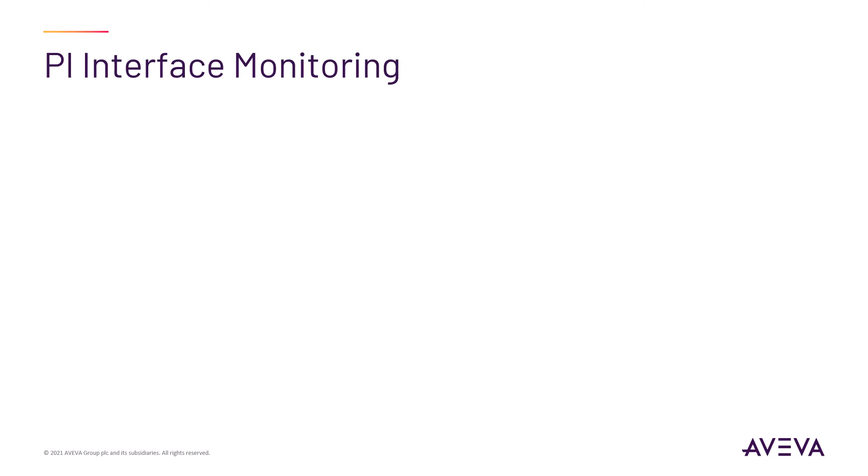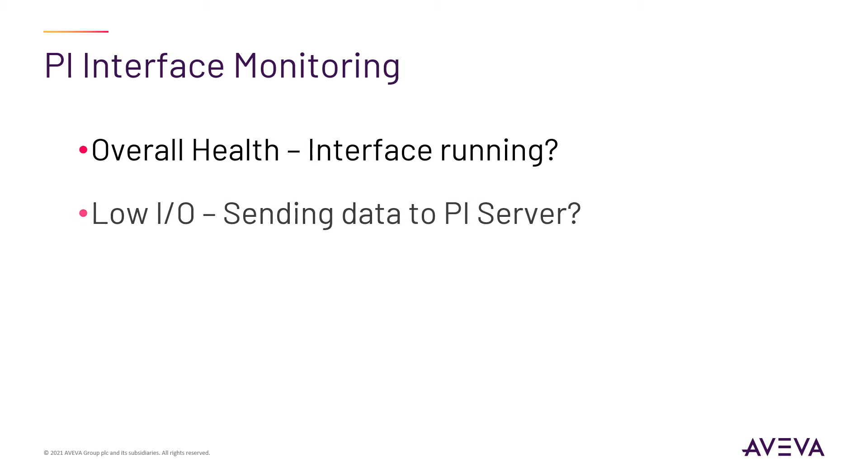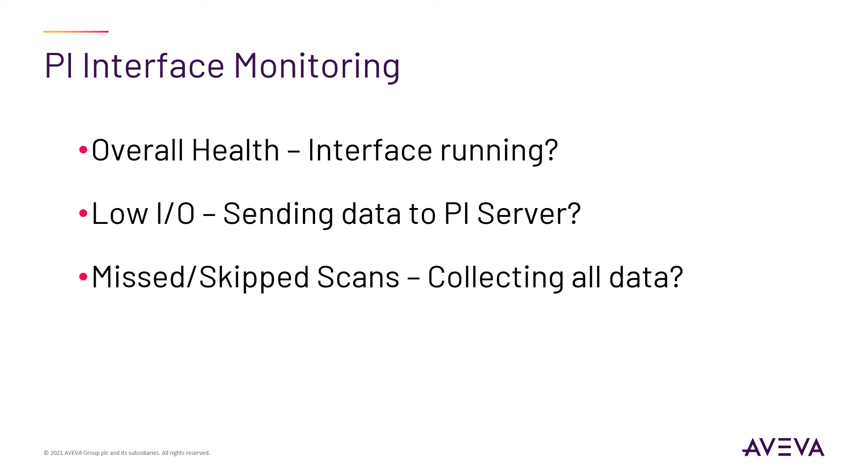Next, you will create the element for the PI Interface component. Key things to monitor for a PI Interface include overall health of the interface — is it up and running, low I/O rates — is it sending data, and missed or skipped scans — missing some data. Monitoring the health of your PI Interface allows you to proactively address issues as they arise.